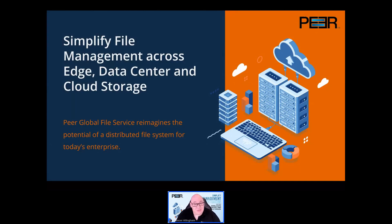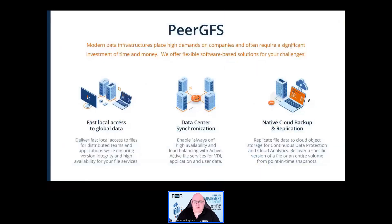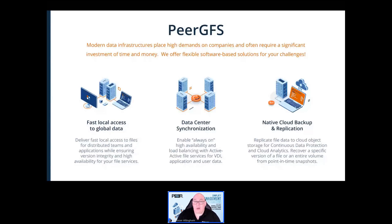Today we're going to take a high-level look at our Peer GFS — Peer Global File Service software — and then take a deeper dive into its edge caching feature. I often like to describe Peer GFS as a Swiss Army knife for distributed file environments. It's most often used to monitor storage locations in real time and synchronize files between them to keep each up to date.